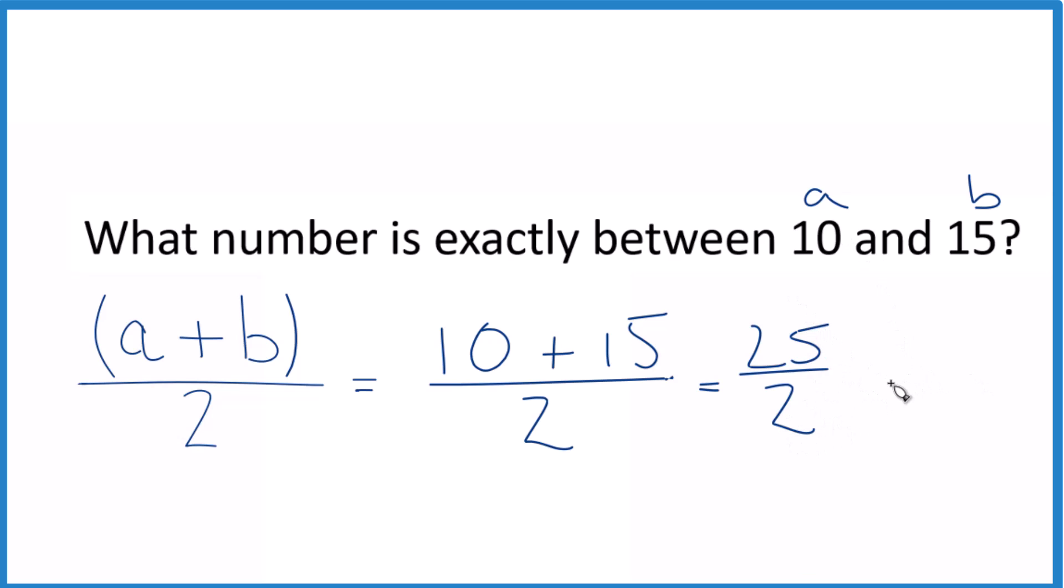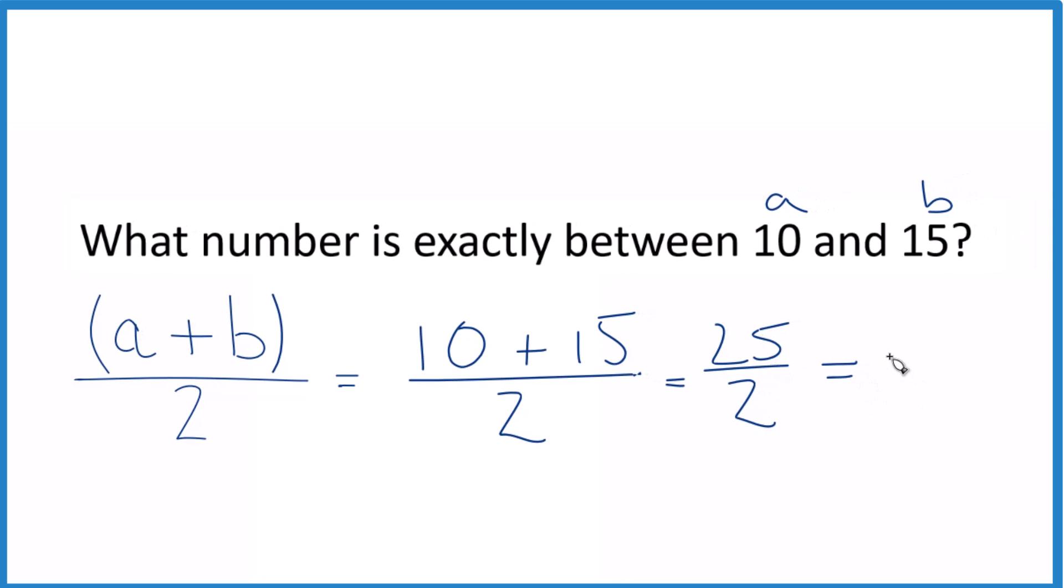This is an improper fraction, so let's change this to a mixed number. 2 goes into 25 12 times with 1 left over. We bring the two across. So we could also say the number exactly between 10 and 15 is 12 and a half.